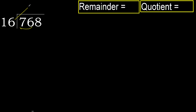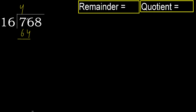16 multiplied by which number is nearest to 76 but not greater? 16 multiplied by 6 is greater. 16 multiplied by 5 is greater. 16 multiplied by 4 — 64 is not greater. 76 minus 64 is 12.